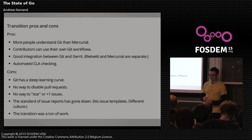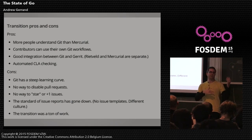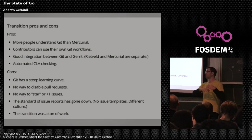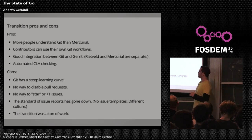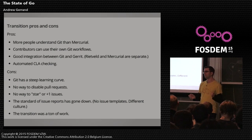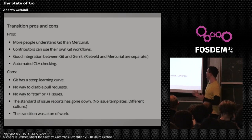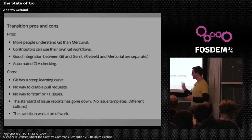Another unfortunate thing about GitHub is the standard of issue reports has gone down. On the old Google Code tracker we provided an issue template — a nice form saying here are the pieces of information we want and here's the format. Now you go to file a Go issue and you get a blank box, so people write anything — like 'I don't understand why I need to import the fmt package to print something.' That's not the appropriate forum. It's a culture difference.